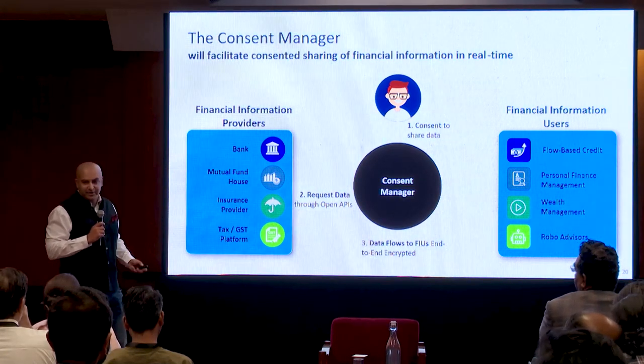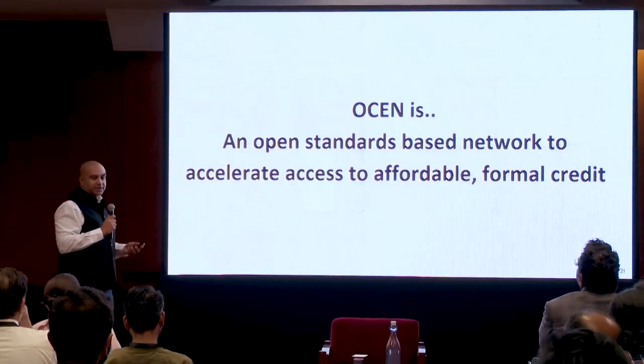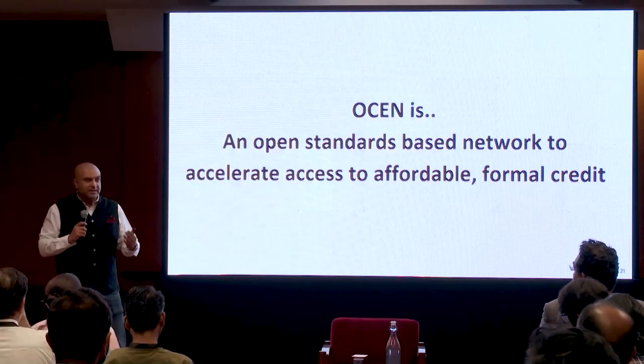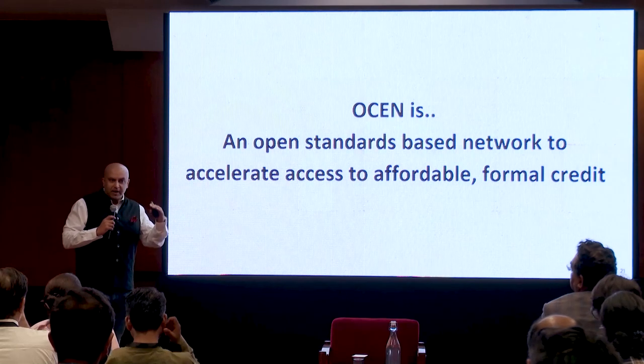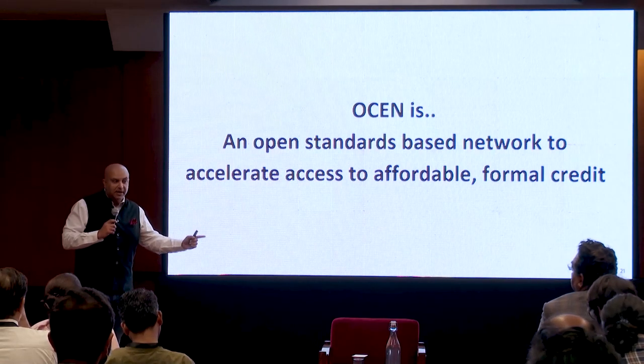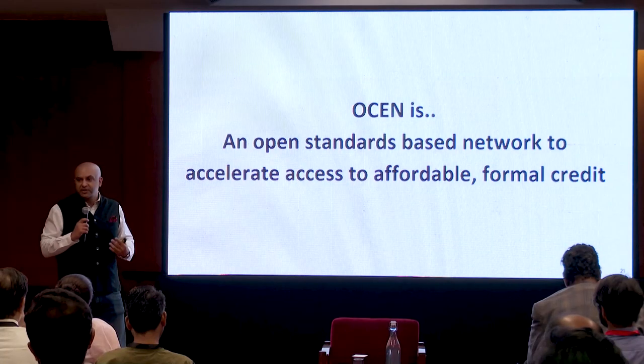OCEN — the Open Credit Enablement Network — is the protocol that stitches all this together. It's two things. First, it's APIs — pipes that make two software programs talk to each other. Typically they're non-standard, but like HTML protocol that lets websites talk to each other, OCEN makes the SME transacting party and the lender talk. The second thing is it's a platform — instead of bilateral integrations between 100 LSPs and 200 banks, you integrate once and all parties are available on the other end, whether it's Swiggy, NinjaCard, or India Post Payments Bank. It reduces cost of integration and time to market.